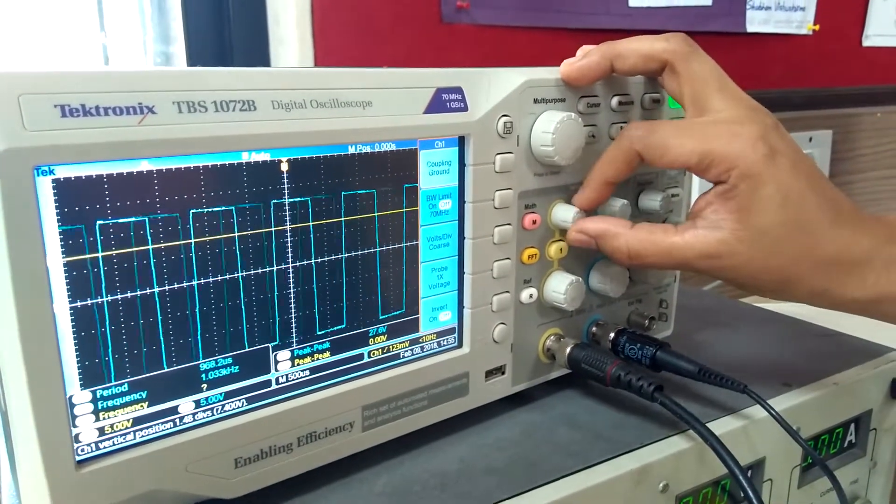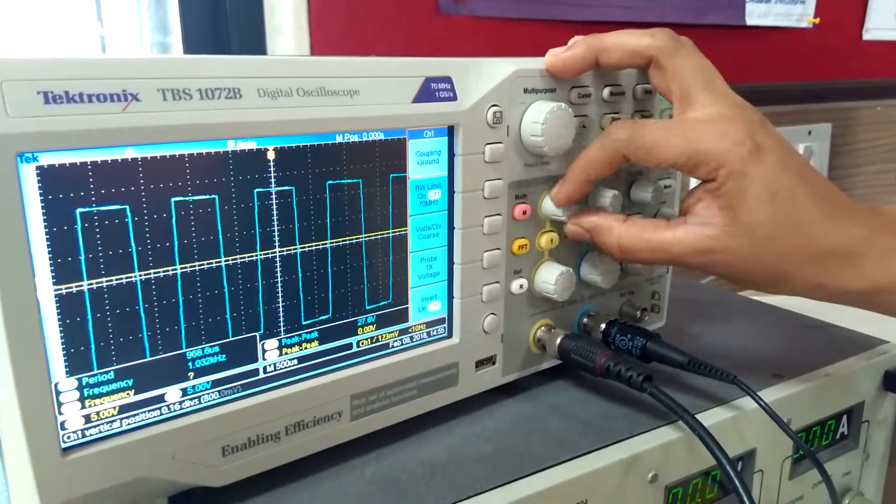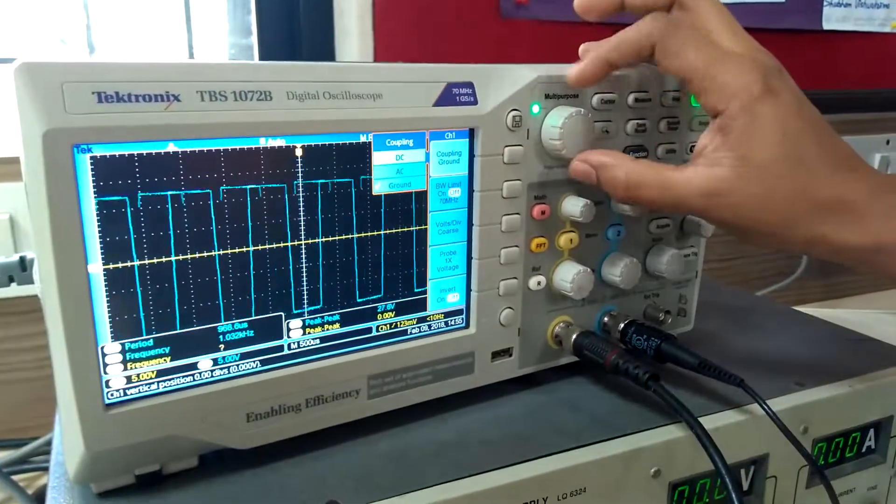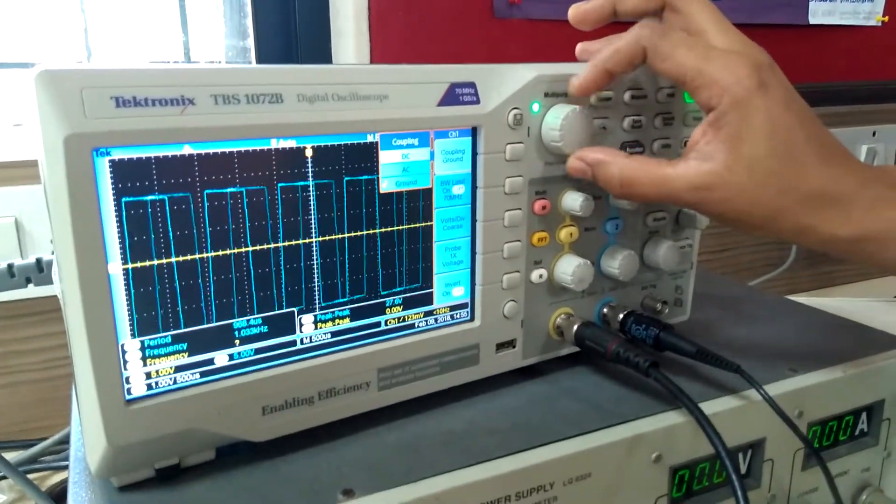Move this cursor to the zero level. Now again, change the coupling from ground to AC.